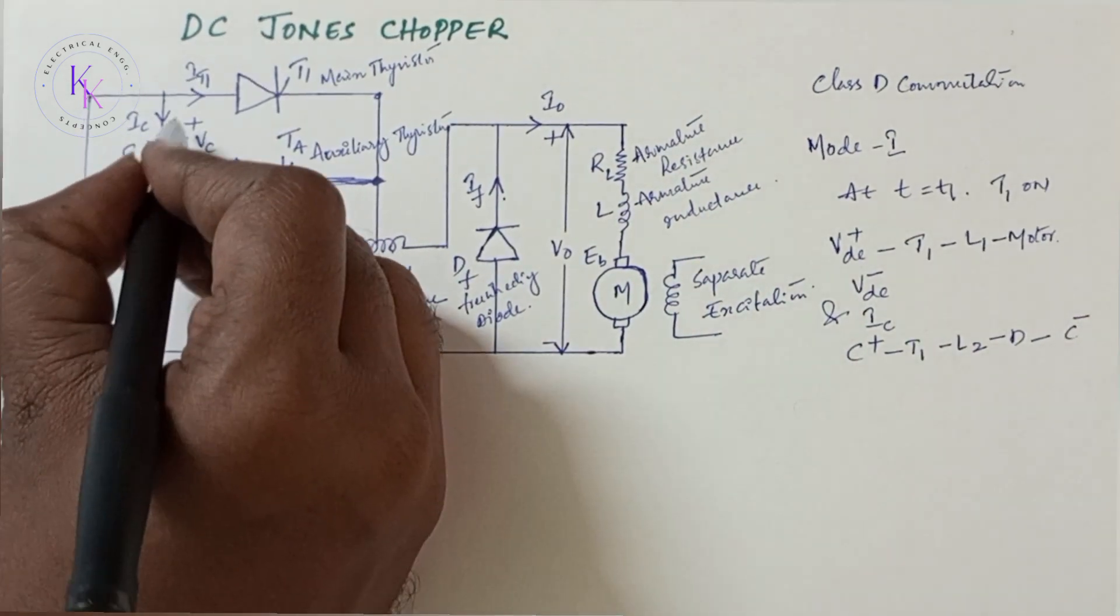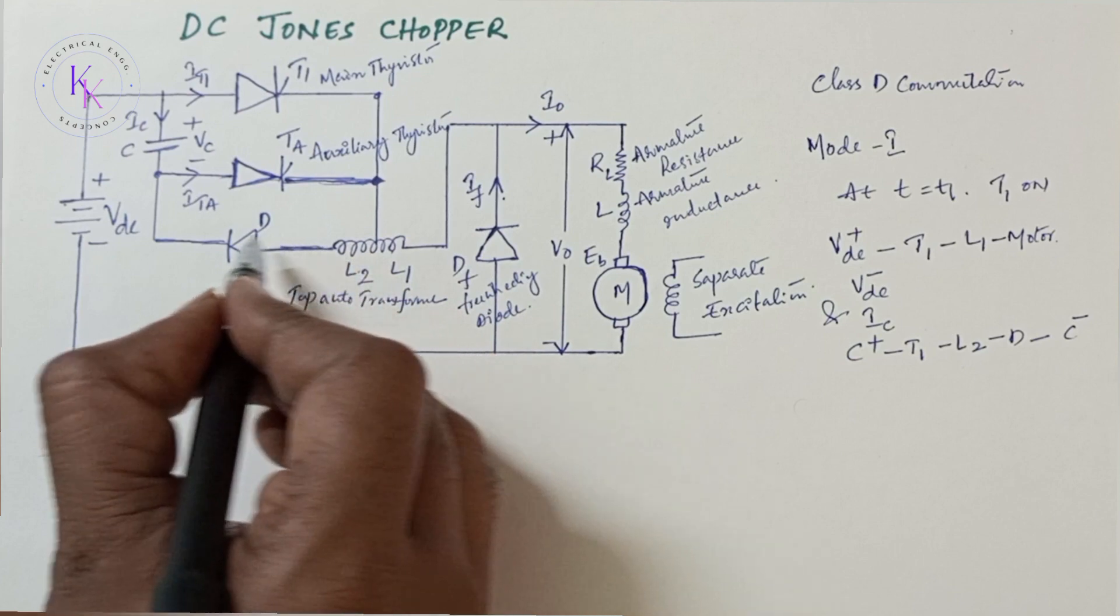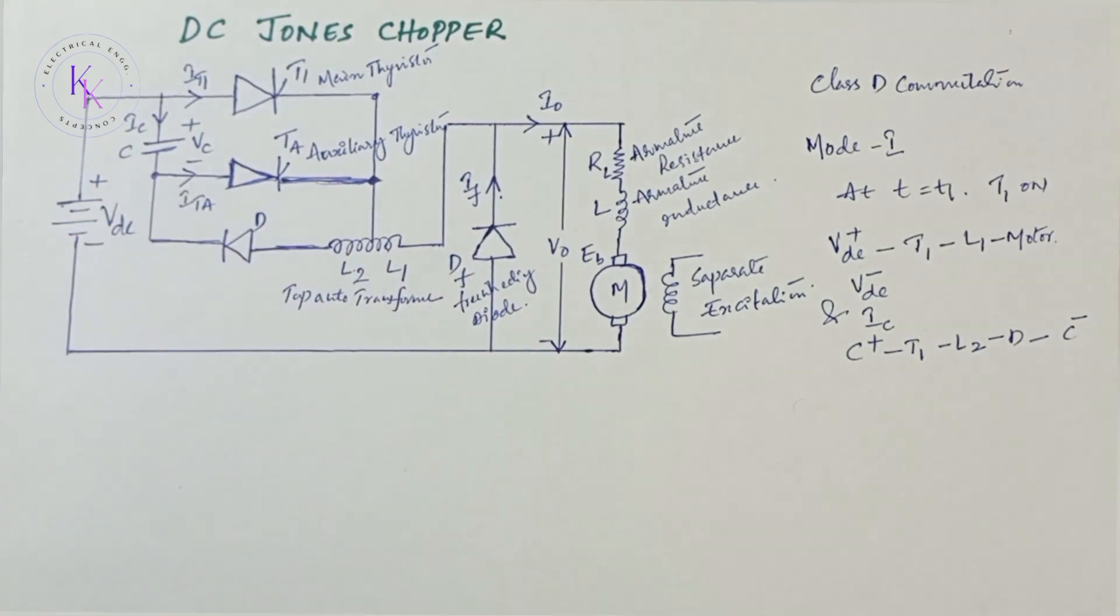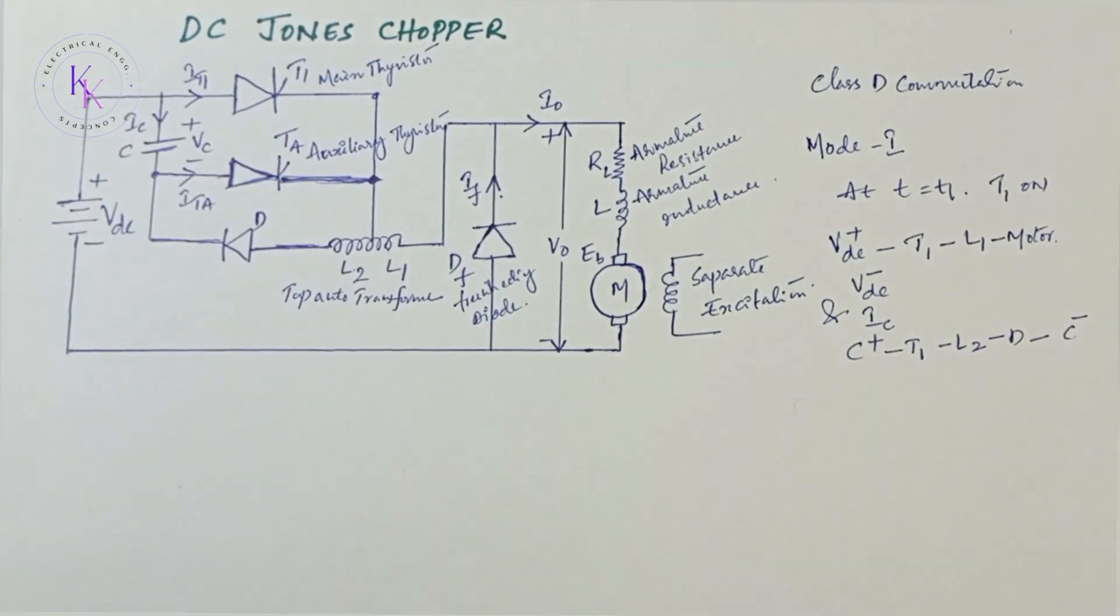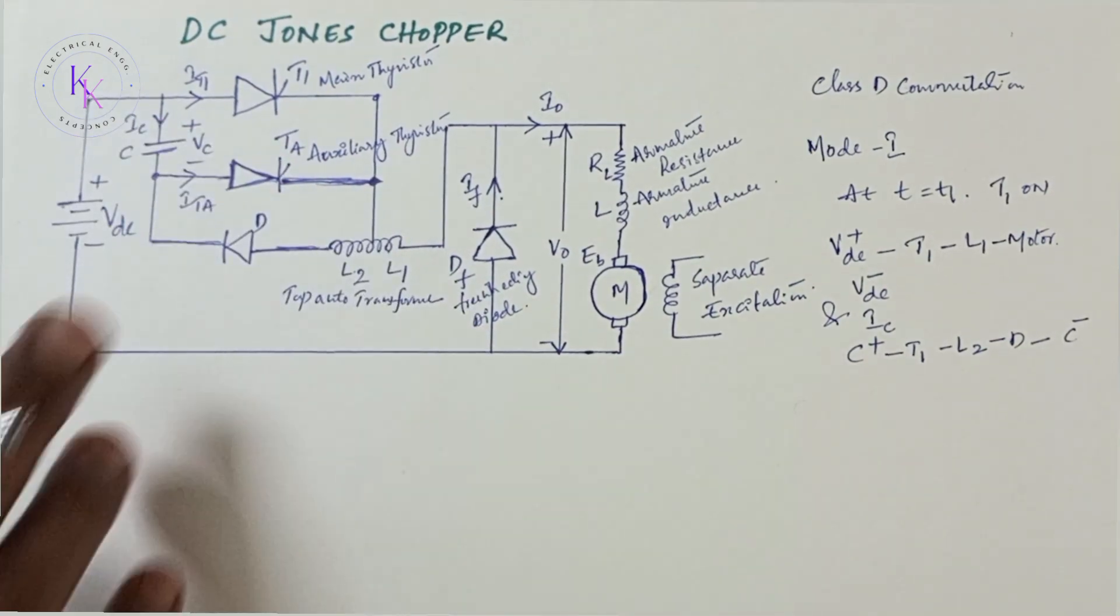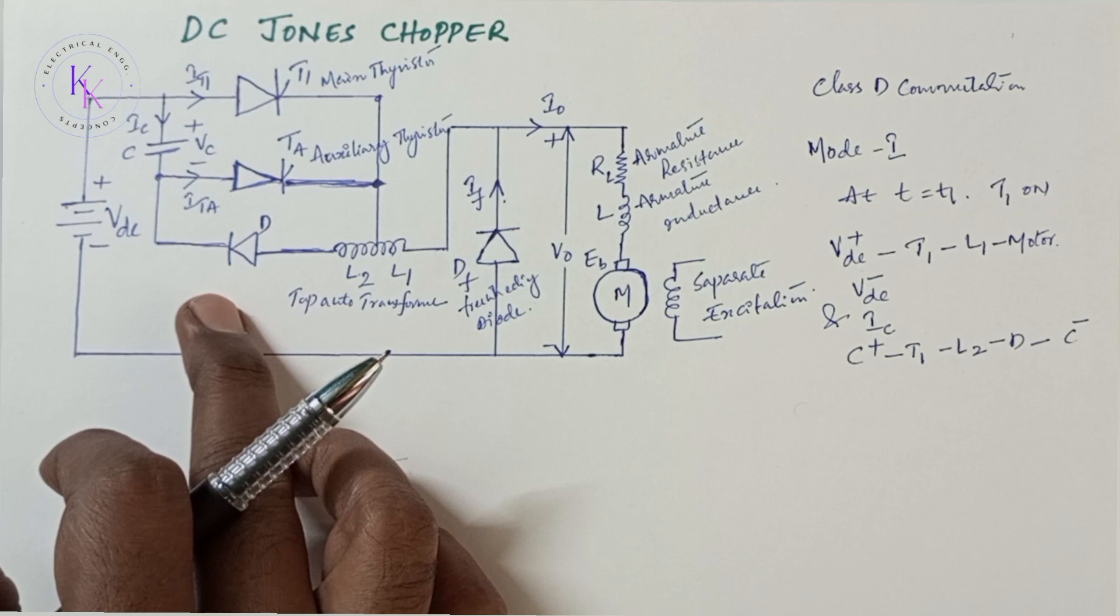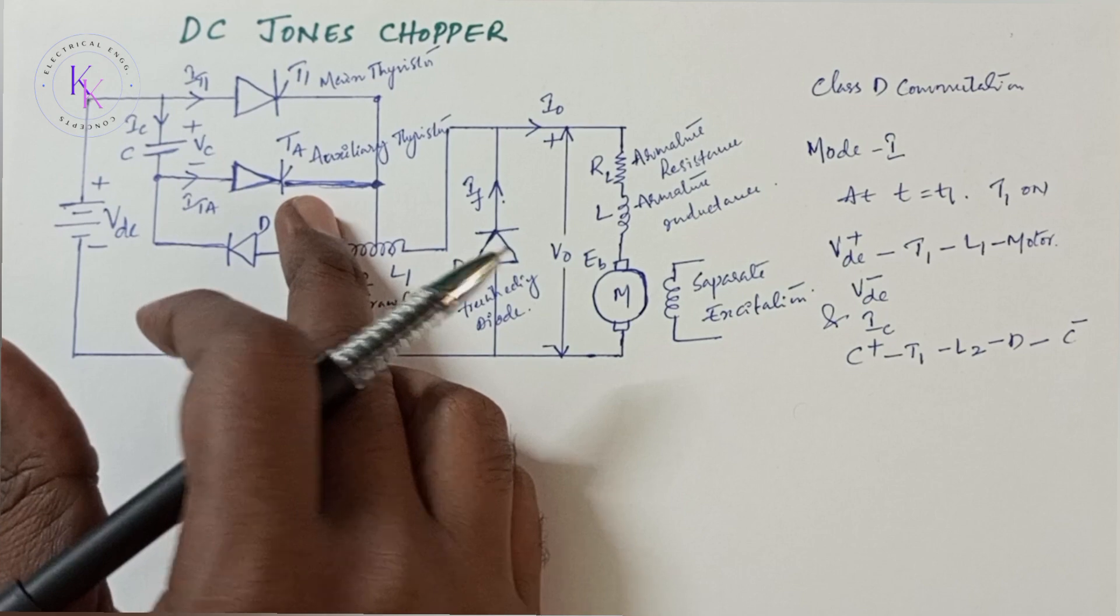The capacitor C discharges through T1, L2, D back to VC. Due to the flow of capacitor current, the capacitor charges in reverse direction. The lower plate becomes positive and the upper plate becomes negative. Due to the presence of diode D, the capacitor retains the charge until auxiliary thyristor TA is triggered.